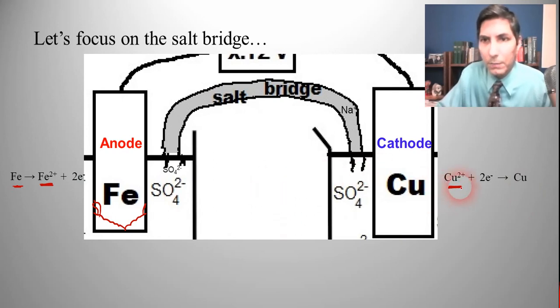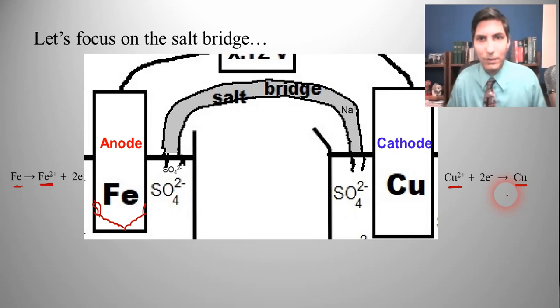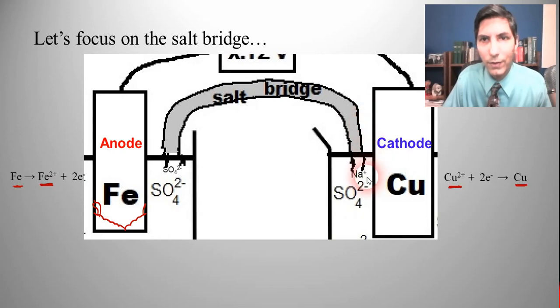And we need to get some positive charges in there to counteract that so we don't electrocute ourselves on that side. So we're going to get these positive charges that are going to gravitate toward the cathode. And so that's what happens in the salt bridge.